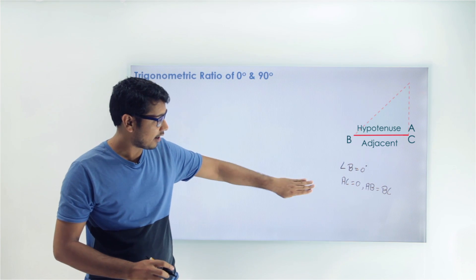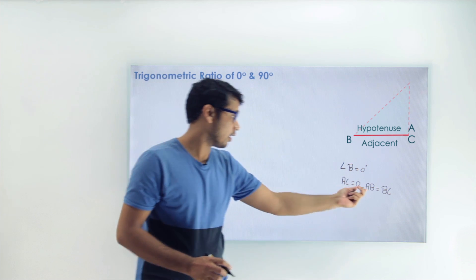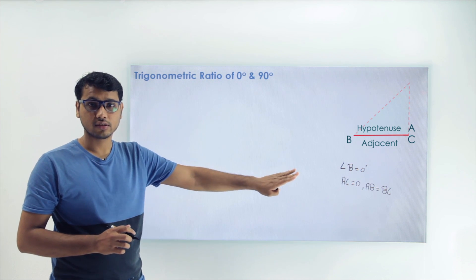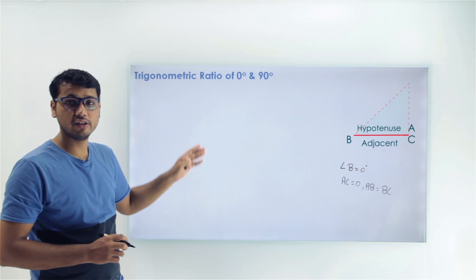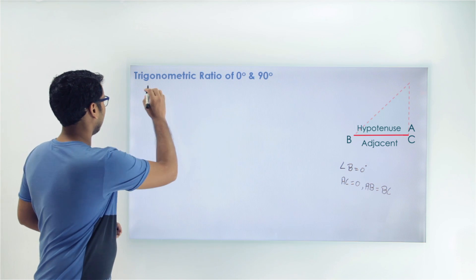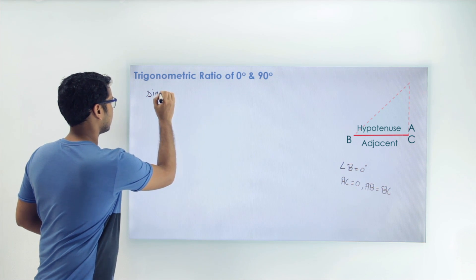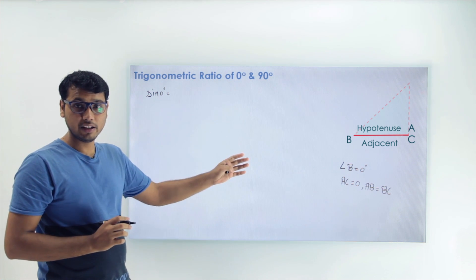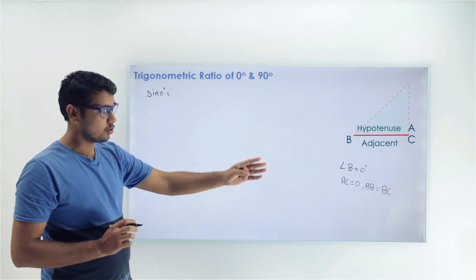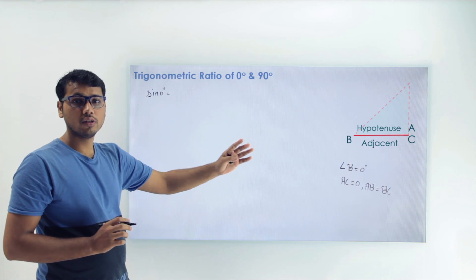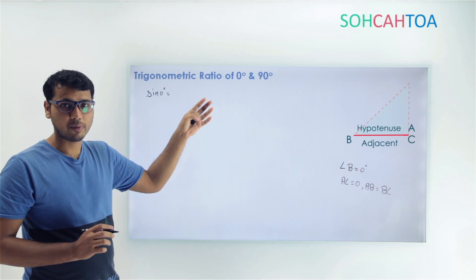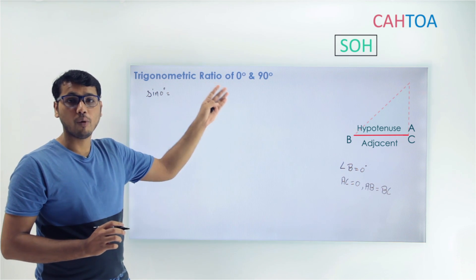Now we have the lengths of the opposite, hypotenuse, and adjacent, so we can apply SOHCAHTOA for angle B which is 0 degrees and find all the trigonometric ratio values. Let's write down the first trigonometric ratio: sine of 0 degrees. Since we are looking at angle B, the opposite has become 0 and the hypotenuse has become equal to the adjacent. Sine is opposite upon hypotenuse.